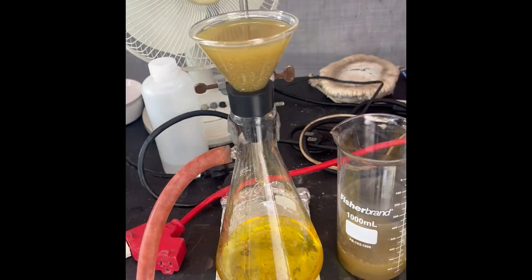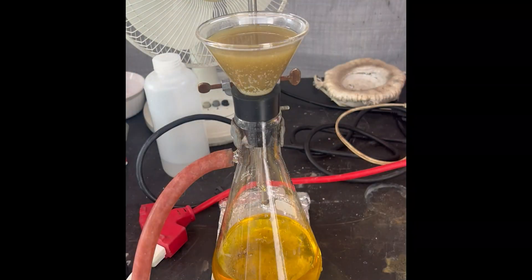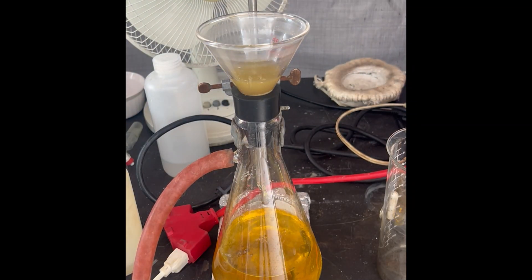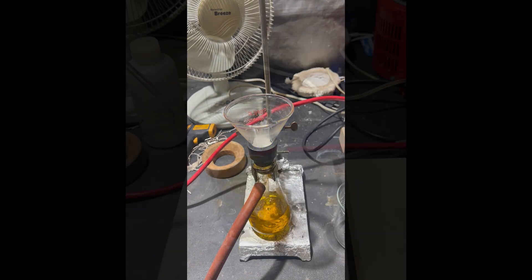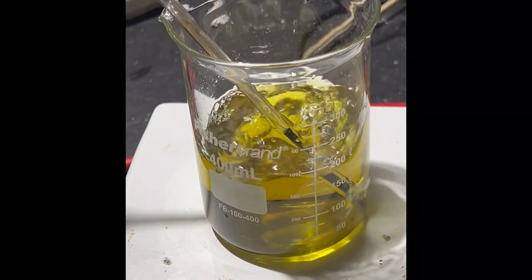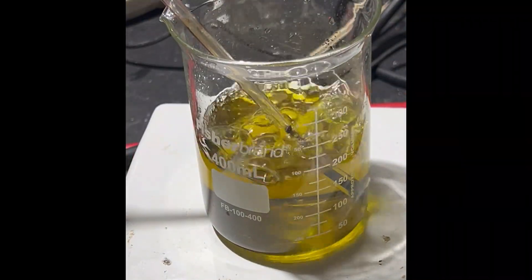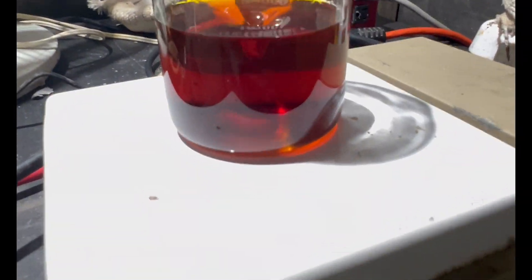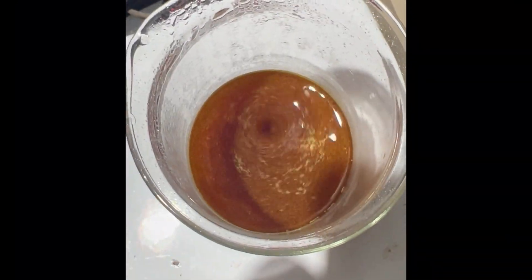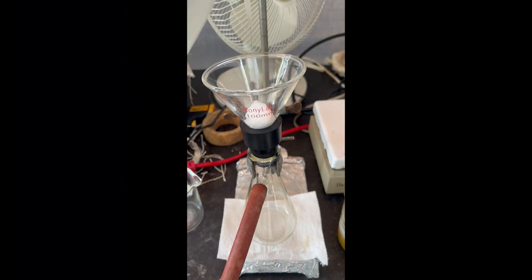I boiled down the filtrate, let it cool, filtered it again, and bubbled more hydrogen sulfide through the filtrate. This was a mistake in retrospect, and all it did was introduce more sulfide impurities, as can be seen by the color of the solution darkening. I'm pretty sure they're just polysulfides, but those will mostly get removed later. So I moved on.